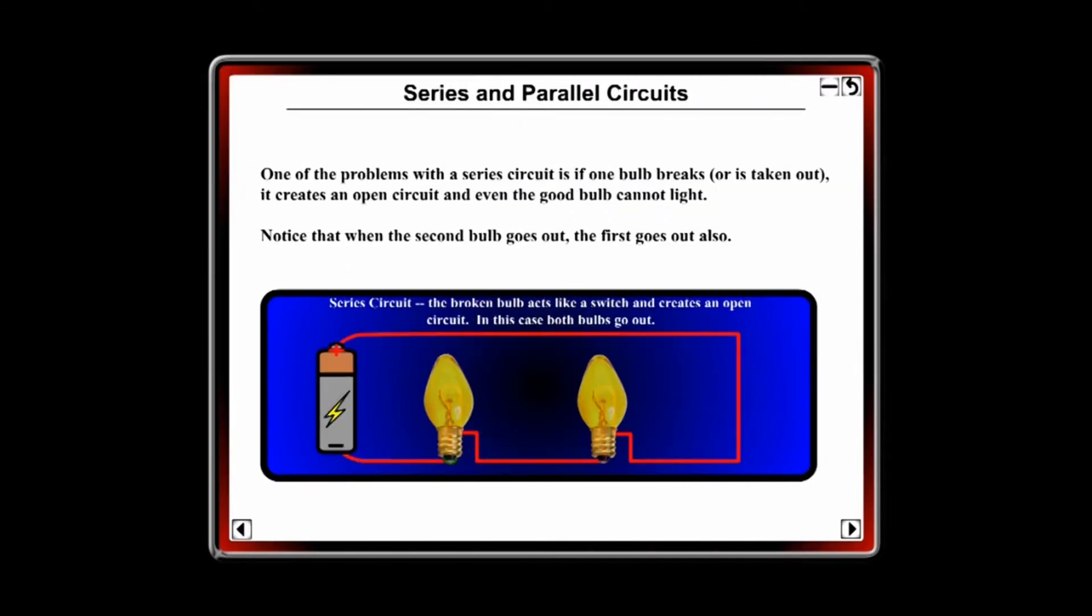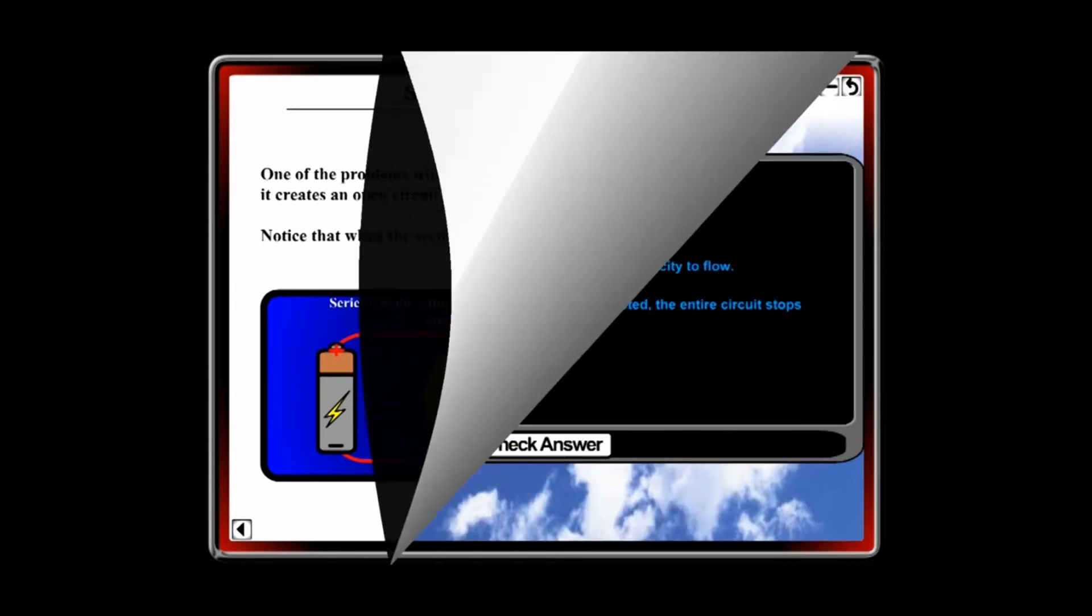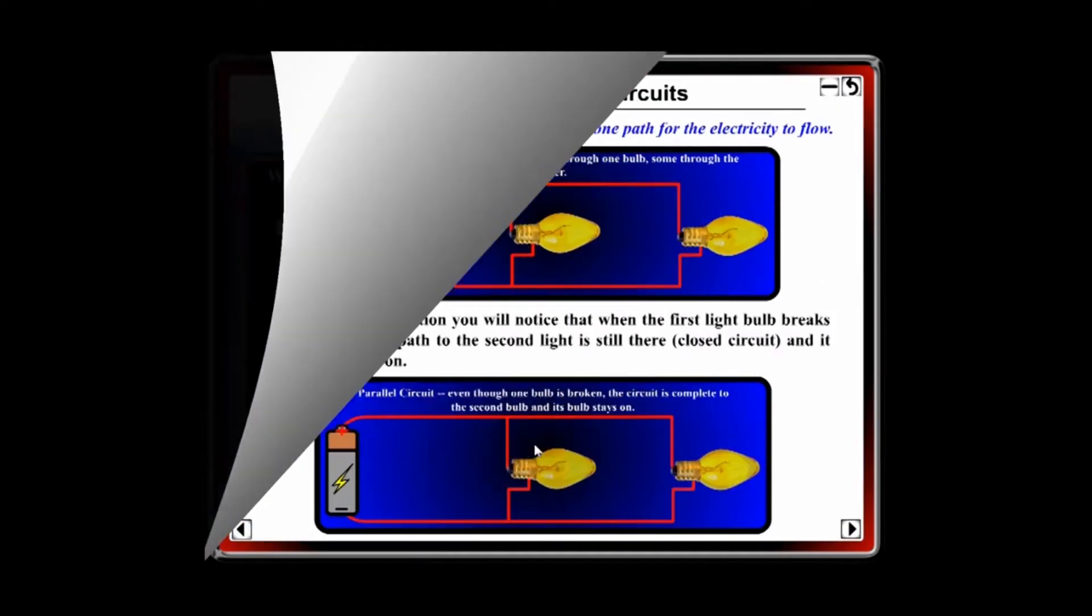The next page shows how, in a series circuit, if one bulb goes out, the entire circuit goes out. Students answer multiple choice questions as they go through each lesson.